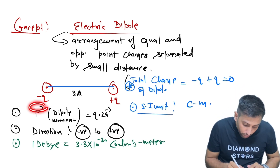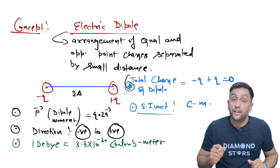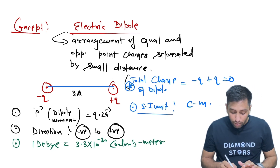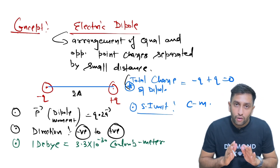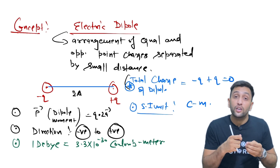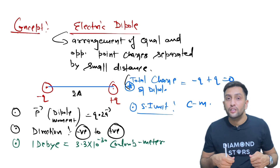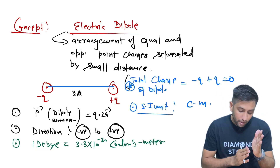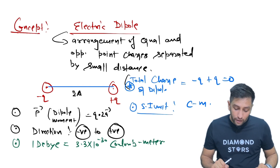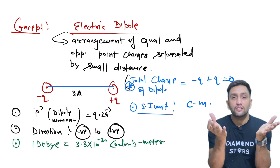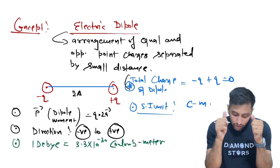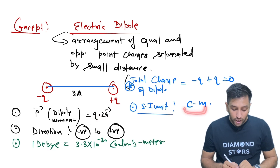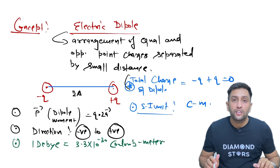Dipole moment is a vector quantity. When it is a vector quantity, you will ask what is the direction. This direction is conventionally taken as minus to plus — negative to positive. We have discussed the direction of two concepts: one is electric field, which is also a vector quantity, and secondly the dipole moment vector, also a vector quantity, conventionally taken as negative to positive. Electric field direction is positive to negative and dipole moment direction is negative to positive. Please do remember this point.